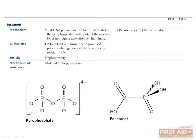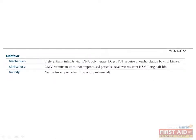Foscarnet is a pyrophosphate analog that inhibits viral DNA polymerase through competitive inhibition at the pyrophosphate binding site. Unlike ganciclovir and acyclovir, foscarnet does not require activation by viral kinase. This nephrotoxic agent is used in the treatment of CMV retinitis unresponsive to ganciclovir and for treatment of acyclovir-resistant HSV. Cidofovir preferentially inhibits viral DNA polymerase and also does not require phosphorylation by a viral kinase; it is useful in treatment of CMV retinitis and acyclovir-resistant HSV.